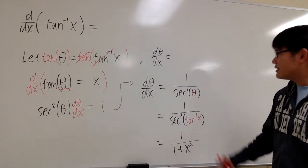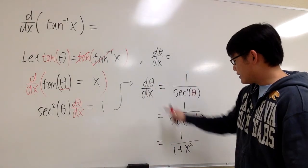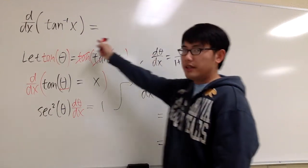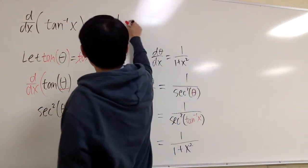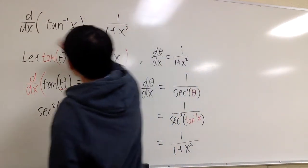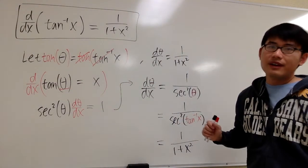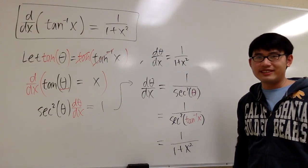And there you have it. dθ/dx equals 1 over 1 plus x squared. So in another word, the answer to my original expression is 1 over 1 plus x squared. Let me box this. This is how you can derive the derivative of inverse tangent x. That's it.